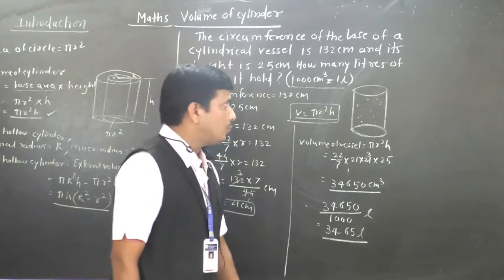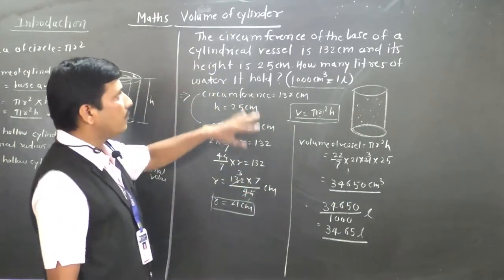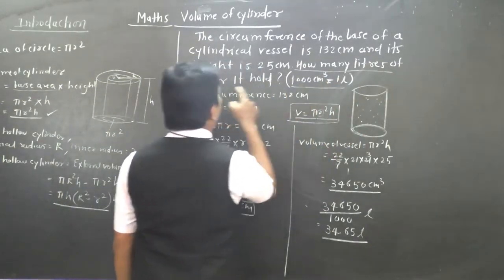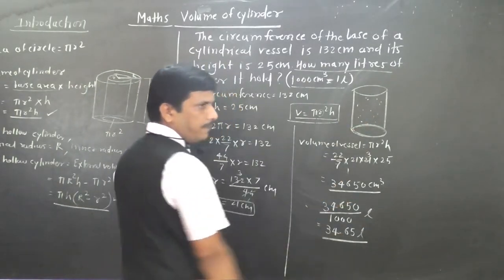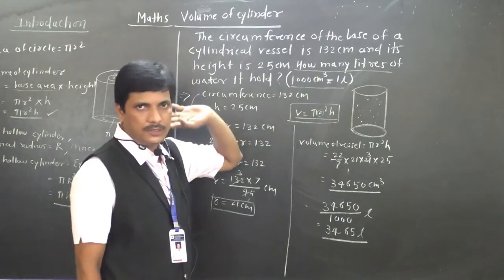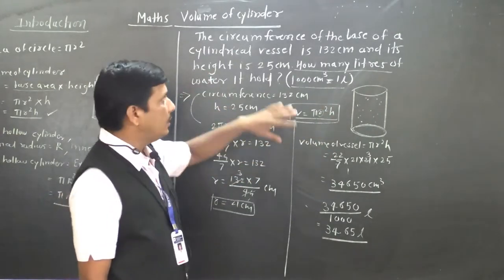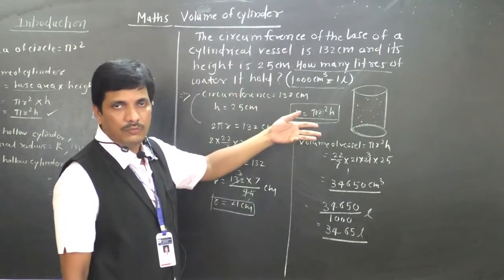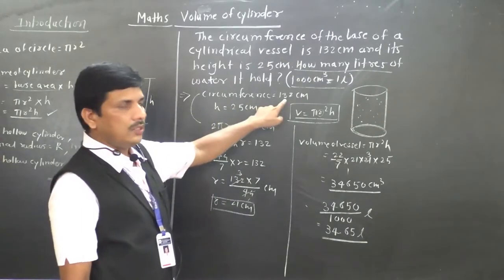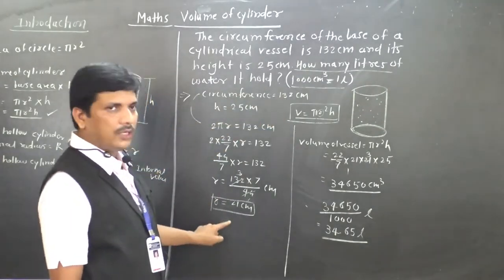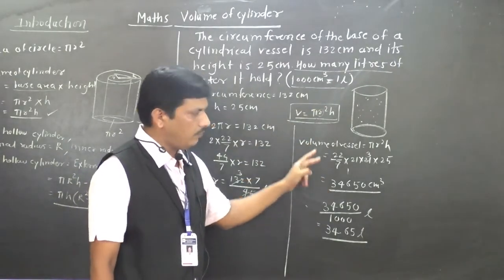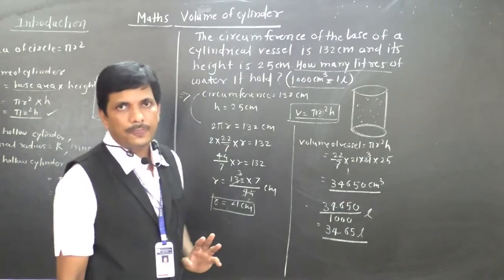So we got the answer in liters. We found volume because the question asked how many liters of water the basin holds — that means we find the capacity. Three things to consider: curved surface area, total surface area, and capacity. We must understand what we have to find first. Circumference was given, from that we found radius, and with the radius we found the volume, then converted to liters. Thank you.